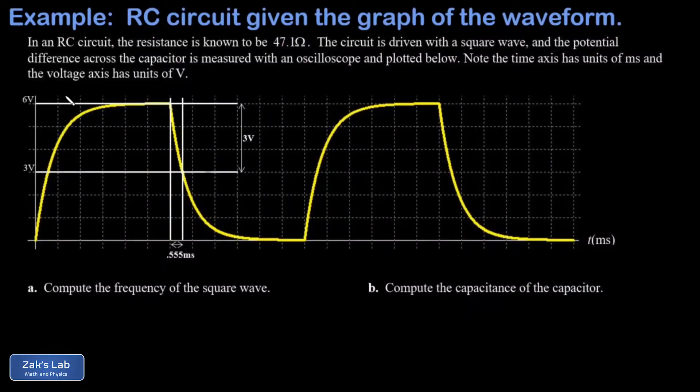In this video we're given a waveform for an RC circuit and we're told the resistance in the circuit is 47.1 ohms. The big goal here is to determine the capacitance of the capacitor in the circuit by studying the waveform.